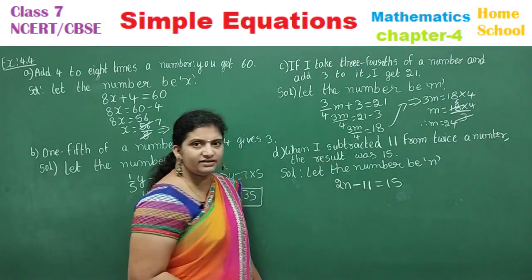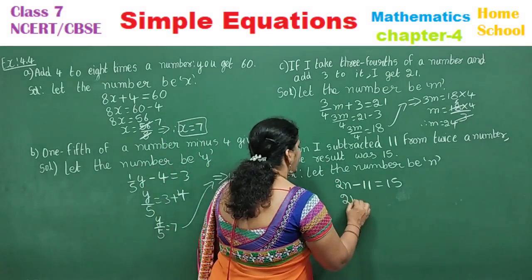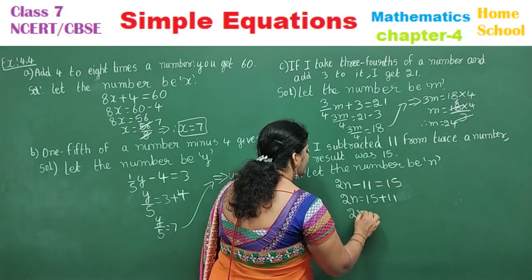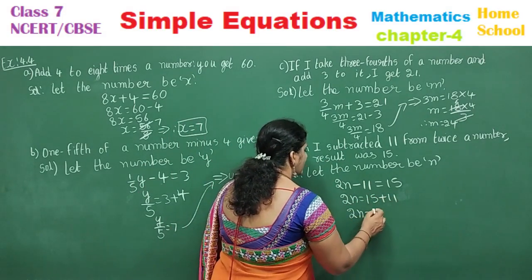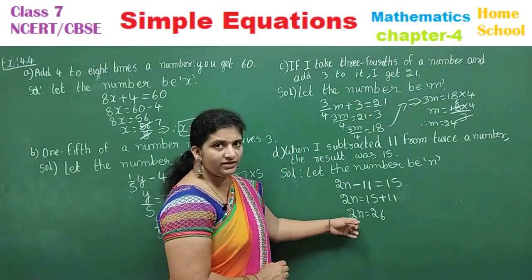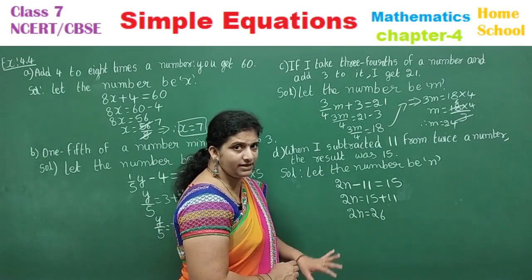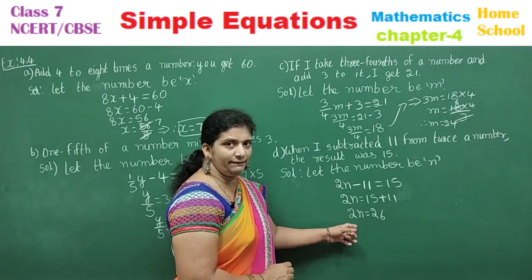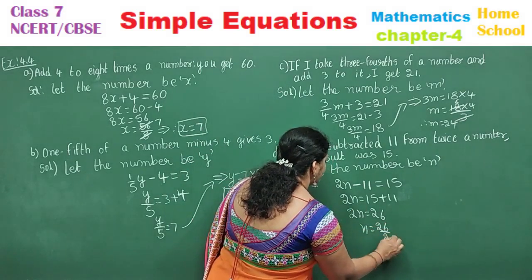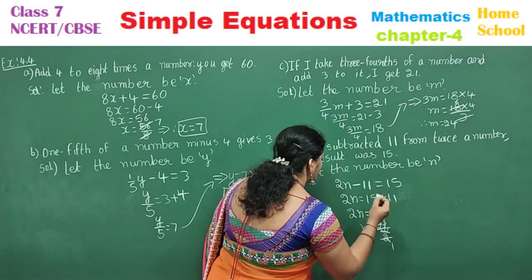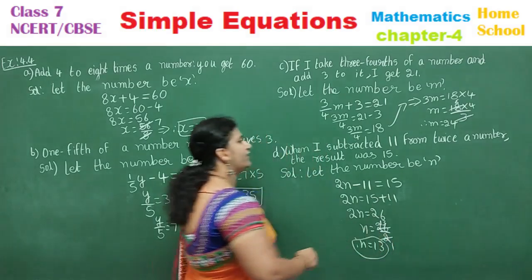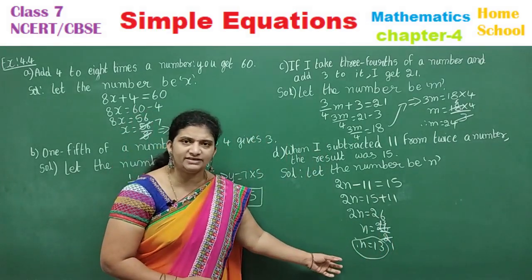Transpose minus 11 to the other side as plus 11: 2N = 15 + 11 = 26. The coefficient 2 is a multiplier — divide both sides: N = 26 ÷ 2 = 13. Therefore the number N is 13.